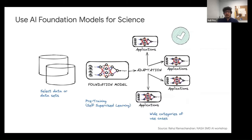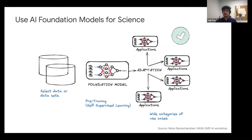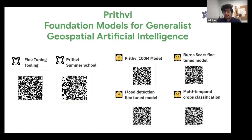The general approach for AI foundation models for science is: select the datasets, then pre-train using self-supervised learning, which lowers the effort required for labeling data or performing supervised modeling. You don't need to do labeling in another scenario. Once you train this model — which can be done by masking approaches and asking the model to generate the masks — you can divert it across multiple applications, using the same pre-trained weights and fine-tuning those weights to cater to multiple varieties of use cases. The first foundation model we created is Prithvi, the Foundation Model for Generalist Geospatial Artificial Intelligence, with a paper released on arXiv.